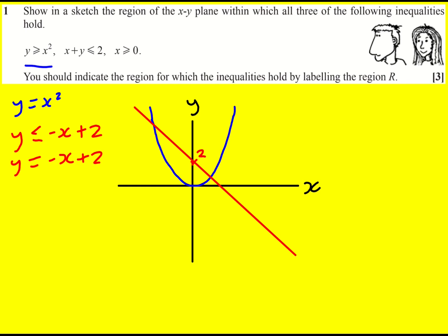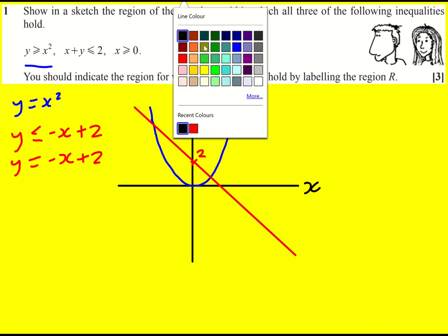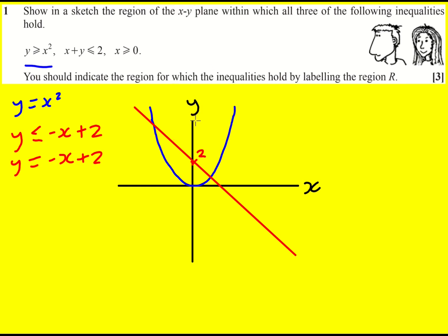And finally, we've got x is greater or equal to zero. So I'm just going to put a line at x equals zero. I mean, I already have, but I'm just going to make it really clear. There we go.